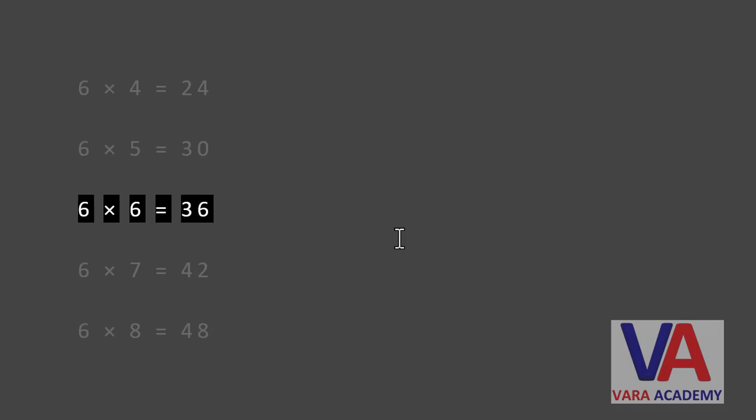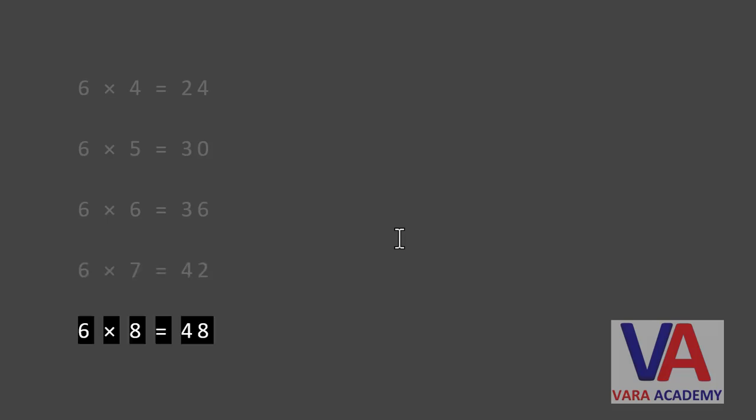Six times six equals thirty six. Six times seven equals forty two. Six times eight equals forty eight.